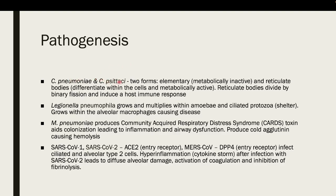For Chlamydia pneumoniae and Chlamydia psittaci, the organism has two forms: the elementary body, which is metabolically inactive, and differentiates within the cell. The organism is found within the cell, which is why standard culture methods cannot grow it. The reticulate body divides by binary fission and induces the host immune response, causing the disease.